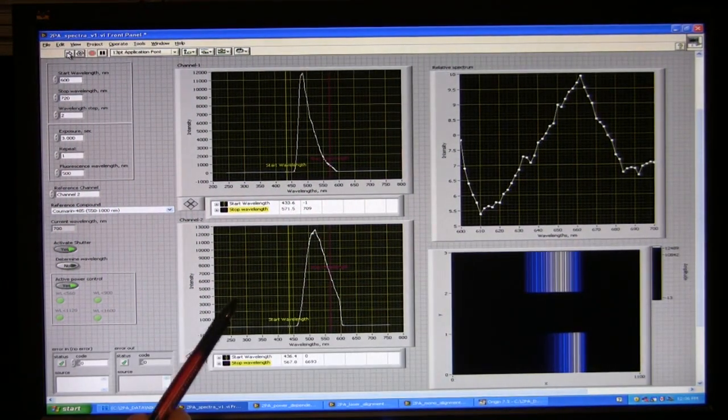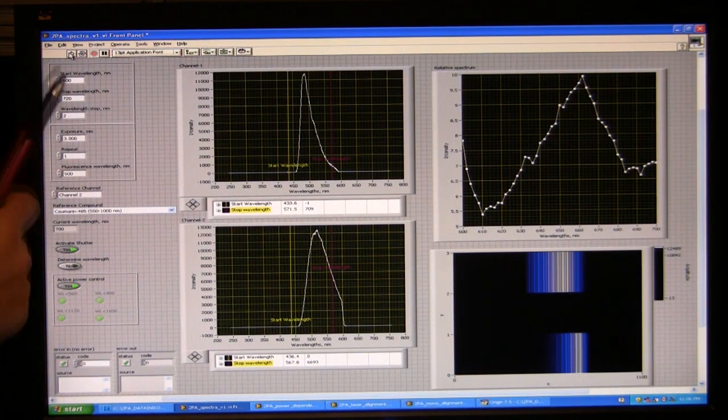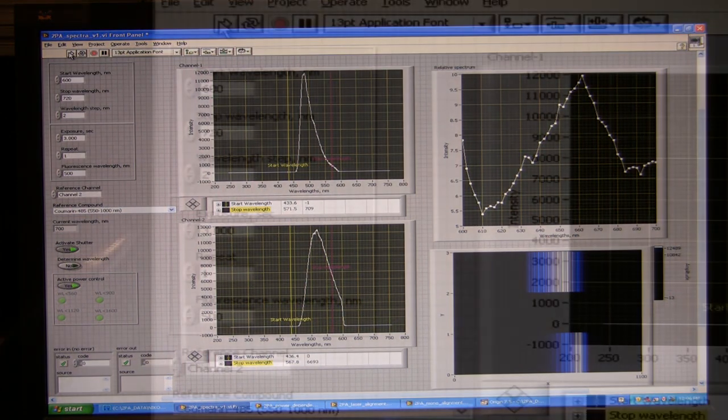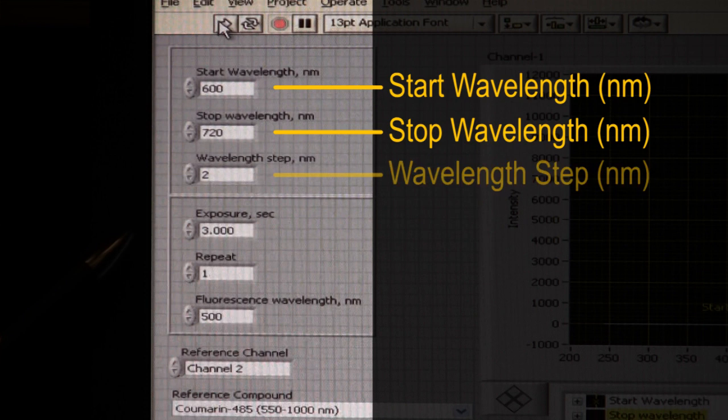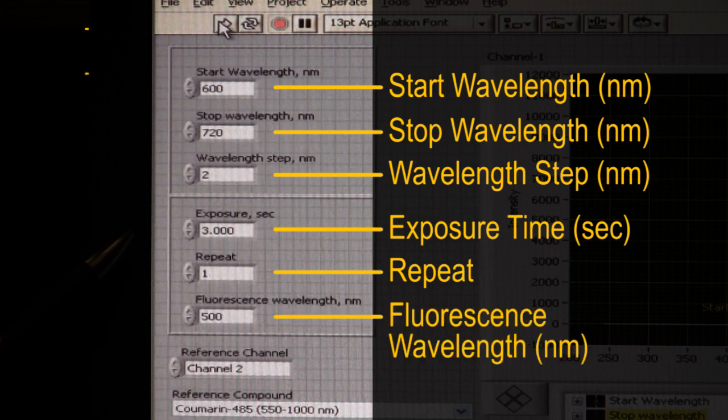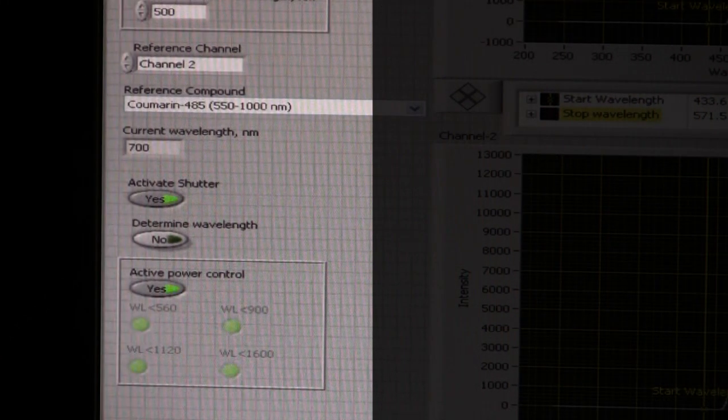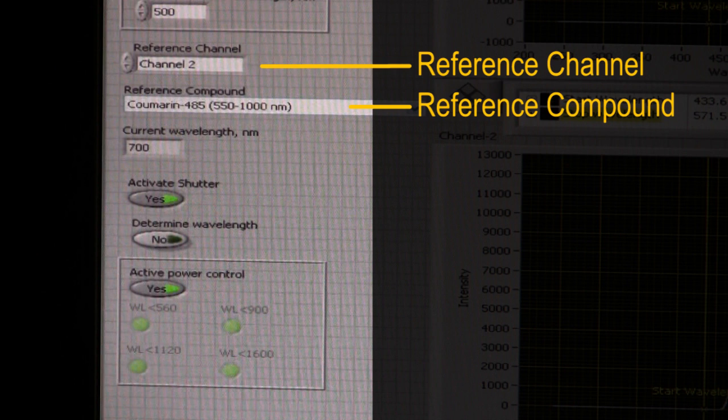So you can see the screen which shows LabVIEW software designed to control the whole experiment. Over here we can enter some parameters like start wavelengths for scan, stop wavelengths for scan, step with which wavelengths are scanned, exposure time for each wavelength, number of repeats for each measurement, and the maximum of fluorescence which is going to be measured. Here we specifically indicate which channels contains reference and which channels contains sample, and here we show which reference compound is used.